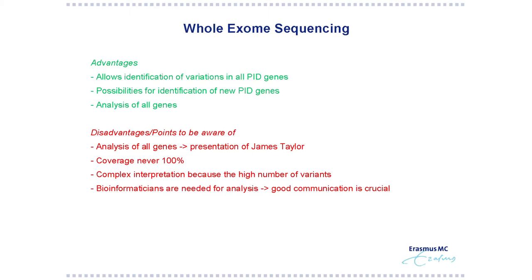The advantage of whole exome sequencing is that you can identify all variations in all PID genes, because all PID genes are part of the exome. You can also identify new PID genes, because you sequence all genes. At the same time, it's also a disadvantage, because if you analyze all genes, you can potentially also identify variants that indicate predisposition to breast cancer or other diseases.